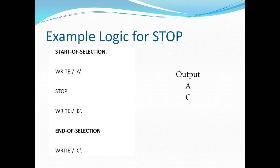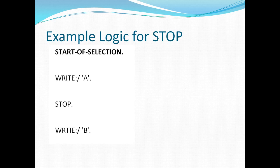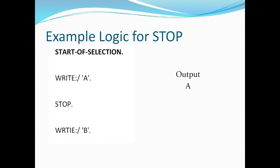Here is another example for STOP. In this case we have only one event which has write A and write B, and the STOP is placed between them. By default the output will write A, and after executing STOP it will search for the next available event. If no further event exists, it will exit the report.